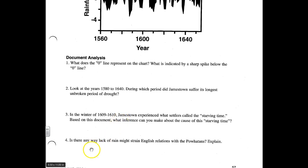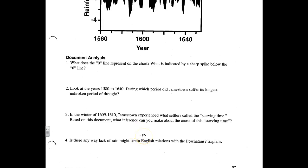The final question is: is there any way a lack of rain might strain English relations with the Powhatan Indians? Explain. Question four asks you to think outside of the document and come up with a reason how a lack of rain might actually strain or make the relationship between the Jamestown settlers and the Powhatan Indian tribes poor — how might a lack of rain make that relationship strained?